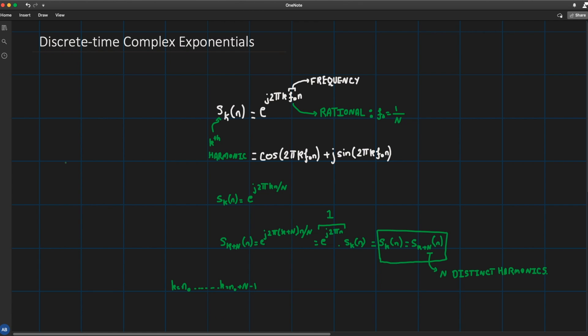So if I am on the integer axis this is n₀, this guy is n₀ plus 1, I can go all the way if this is my n₀ plus N and this is my n₀ plus N minus 1. So in this part I can guarantee that I have N distinct complex exponentials or harmonics.